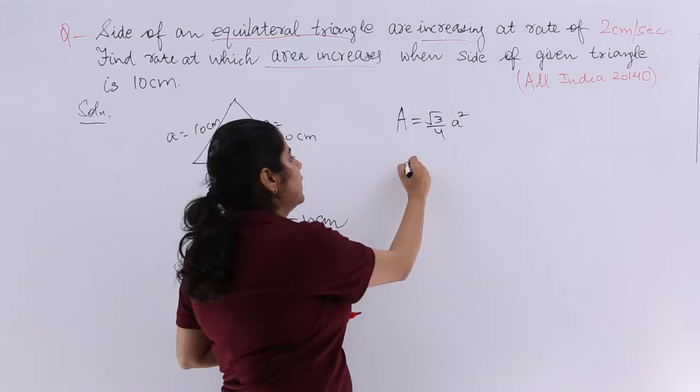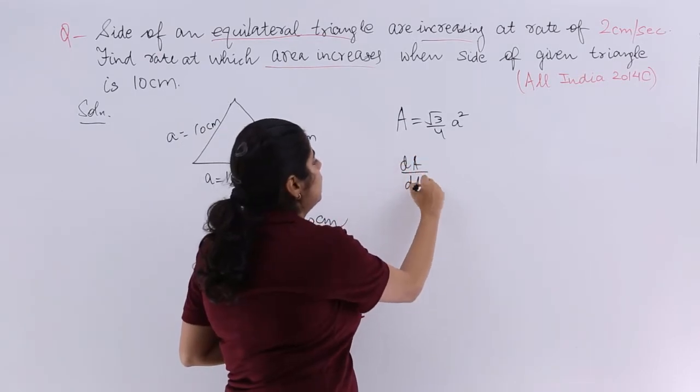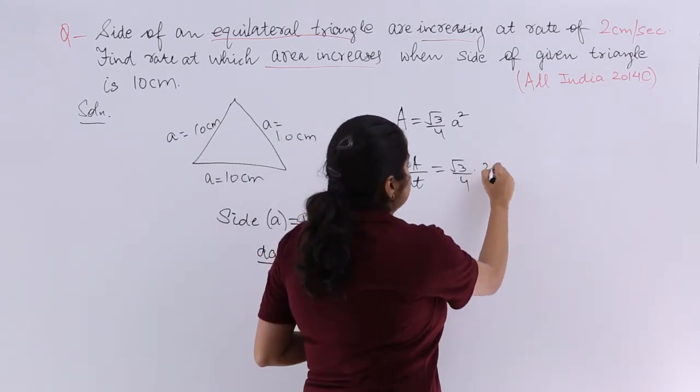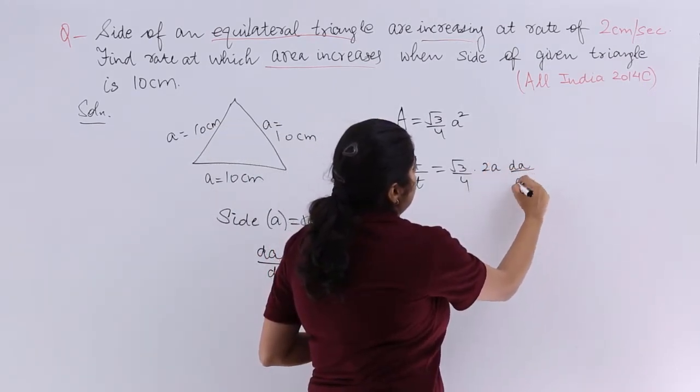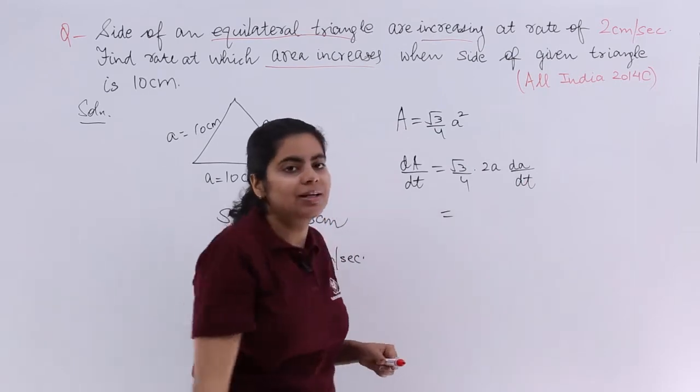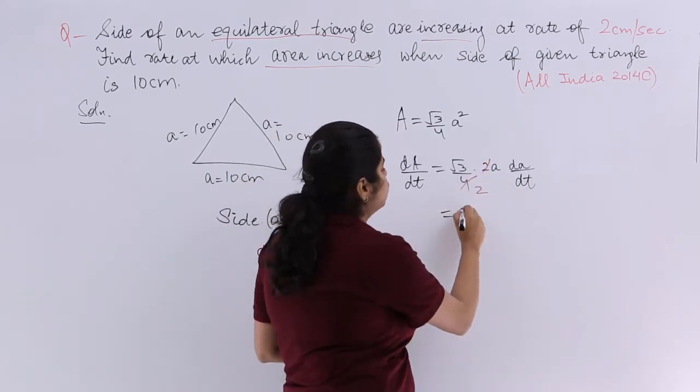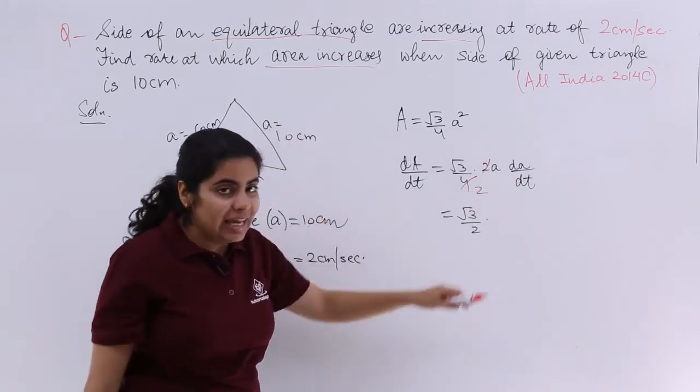The rate of change of area means d capital A upon dt. That is nothing but root 3 by 4 being a constant does not change. 2a da upon dt. Understood? Cancelling what cancels? I get root 3 by 2, multiply a.